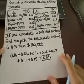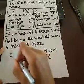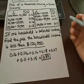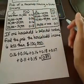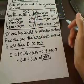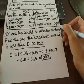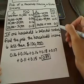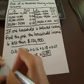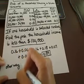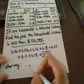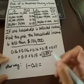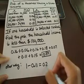The other way to think about this: since all probabilities in this set sum to one, you can take one and subtract the category you don't want, which is a hundred thousand or more. So the calculation is 1 minus 0.11, which also gives you 0.89.